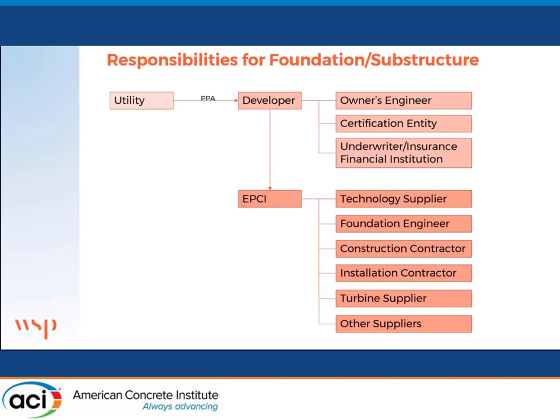The developer then goes into an agreement with an EPCI — Engineering Procurement Construction and Installation Contractor. This model is not quite in process right now because we're still experimenting with how that works. So right now, a developer is probably more likely to still skip the EPCI and contract directly the entities that the EPCI would typically lead. But in the future, it will probably all run through EPCI, which is typical for the oil and gas industry — there's not much new in terms of these responsibilities for energy companies.